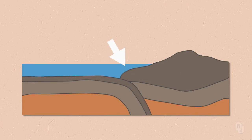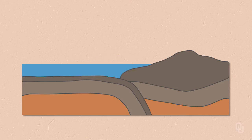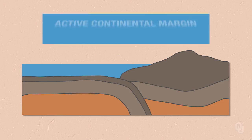There's one interesting thing about continents. If you look at the edge of the continents, some have very steep and narrow continental shelves, like out in California. These are called active margin continental shelves — they're above subduction zones or along transform fault margins.